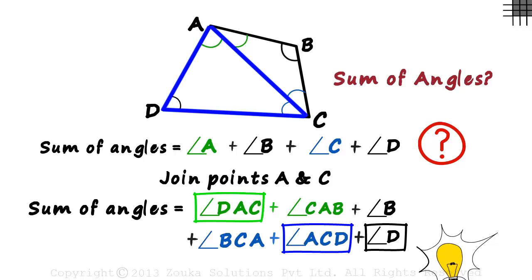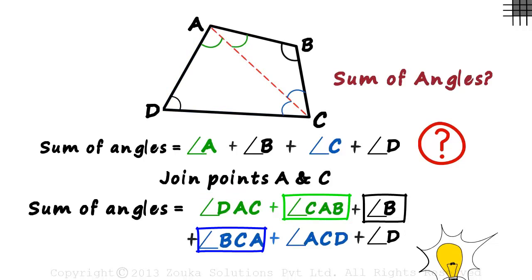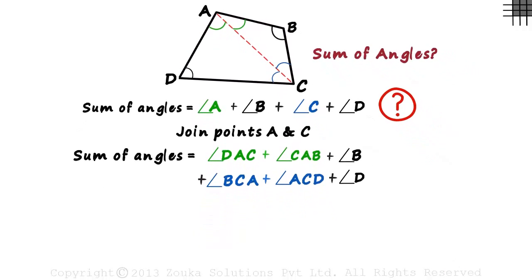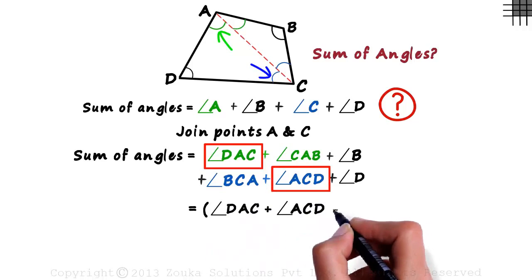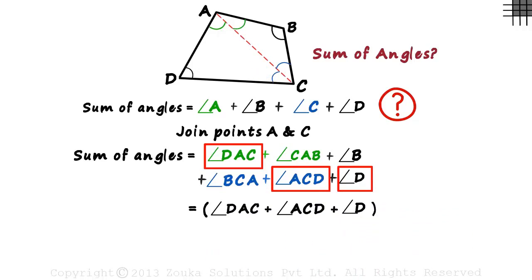These three angles belong to this triangle, and these three belong to this one. We can write the first group as angle DAC plus angle ACD plus angle D. It is the sum of the angles of triangle ACD.